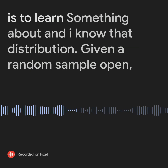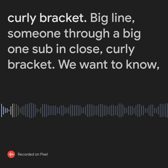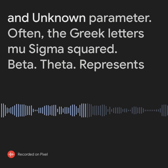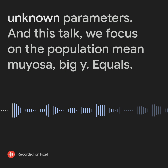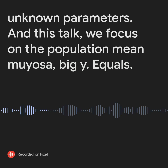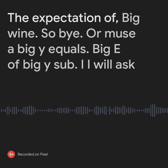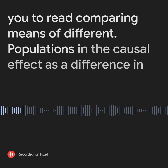Statistical inference is to learn something about an unknown distribution. Given a random sample {Y_1 through Y_N}, we want to know an unknown parameter. Often the Greek letters mu, sigma squared, beta, or theta represent unknown parameters. In this talk, we focus on the population mean mu_Y, which equals the expectation of Y_i, i.e., mu_Y = E[Y_i]. We will also cover comparing means of different populations and the causal effect as a difference in conditional expectations.